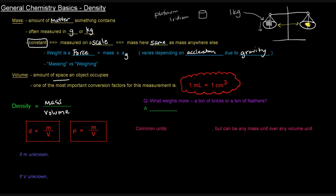There's this classic question: what weighs more, a ton of bricks or a ton of feathers? The answer is neither — a ton is 2,000 pounds either way. If you have 1,000 kilograms of bricks versus 1,000 kilograms of feathers, they have the same mass. What's different is the amount of space they take up. You wouldn't need that many bricks to reach a ton, but a ton of feathers would take up an enormous amount of space. The idea is that bricks are more dense than feathers — they have more mass per unit volume.